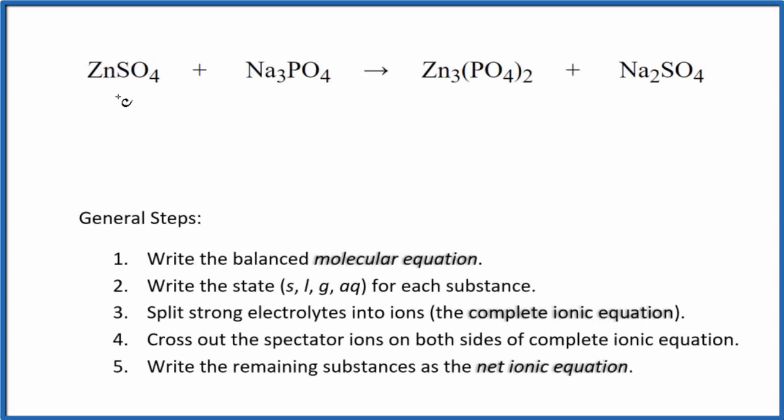In this video, we'll write the balanced net ionic equation for ZnSO4 plus Na3PO4. This is zinc sulfate and this is sodium phosphate.